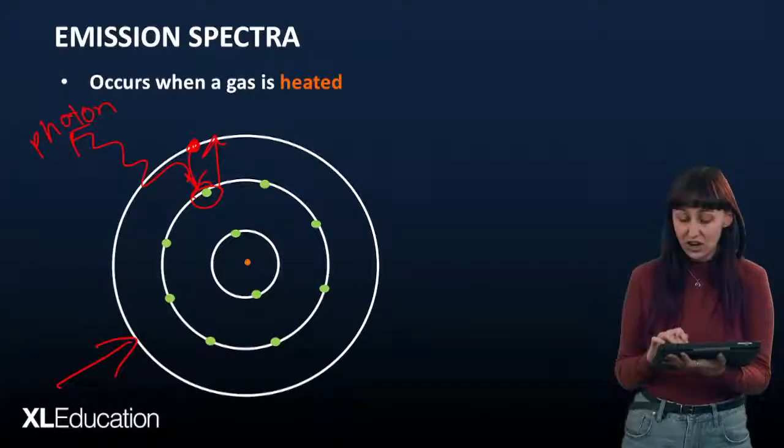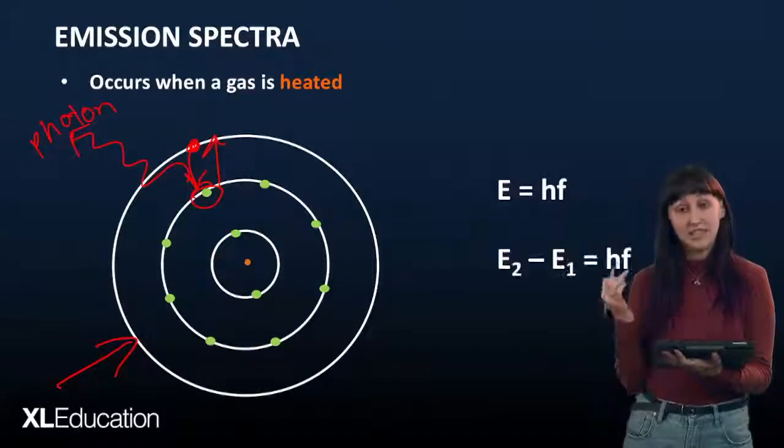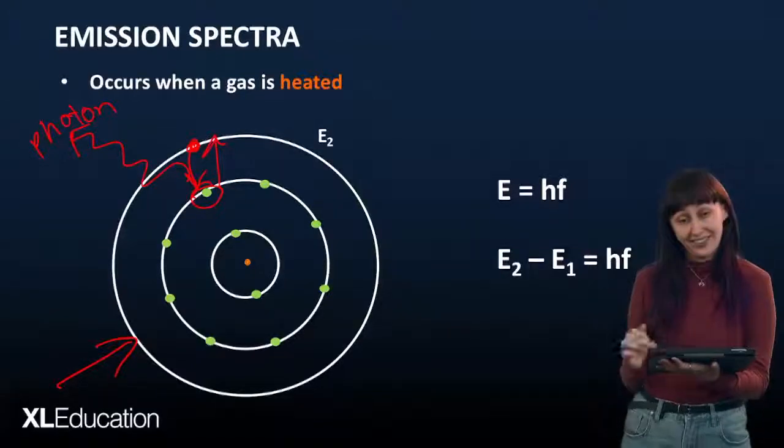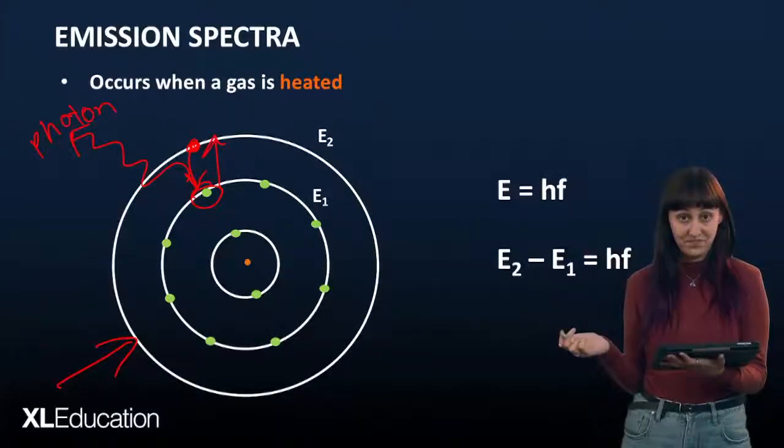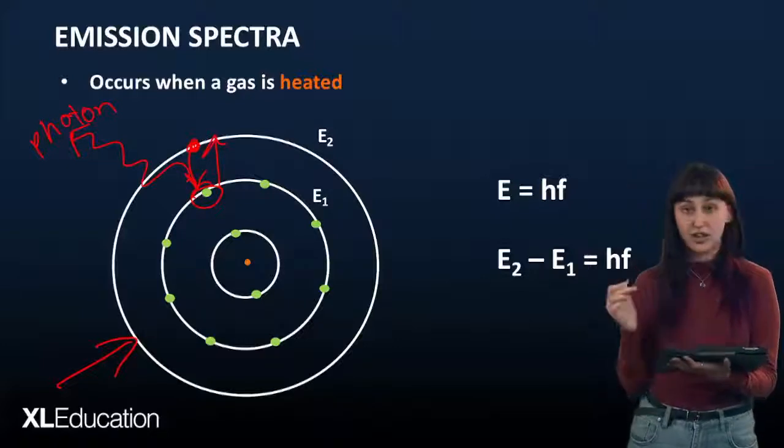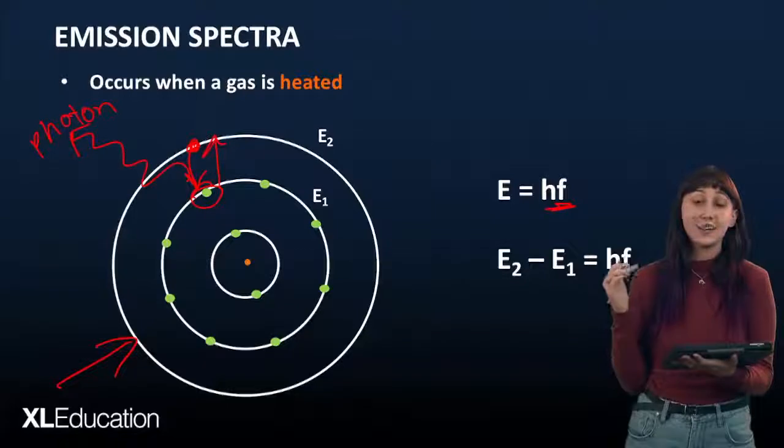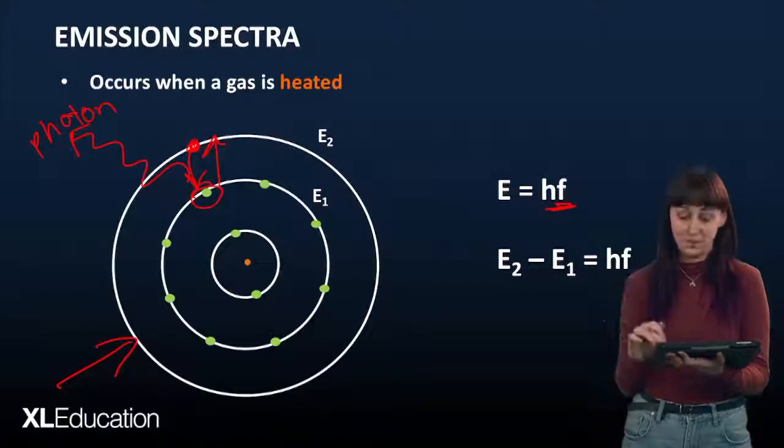The energy of this photon is the energy difference between the higher energy level, E2, and the lower energy level, E1. And if we have the energy of a photon, we can get the frequency of the photon, and we can work out exactly where that photon falls on the electromagnetic spectrum.